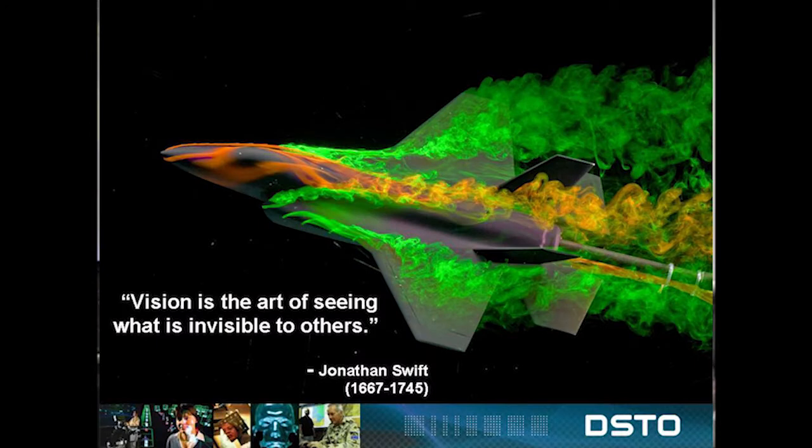It was Jonathan Swift, an 18th century author best known for the novel Gulliver's Travels, who said: 'Vision is the art of seeing what is invisible to others.' Throughout history, there have been many examples of visionaries in science who've done just that, and as a result, revolutionised the way we view and understand nature.